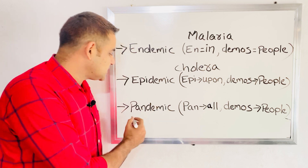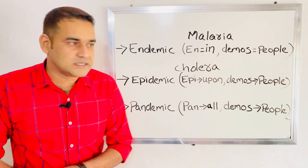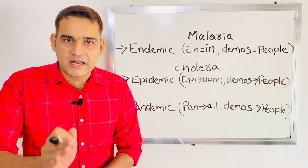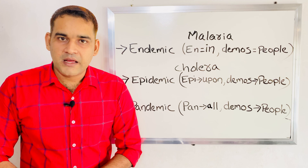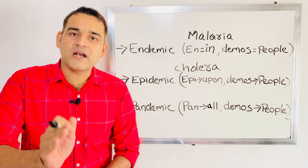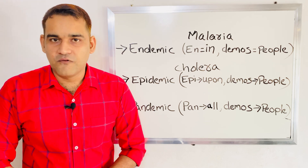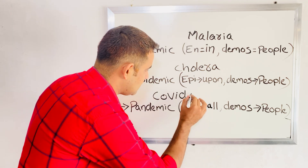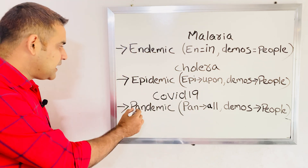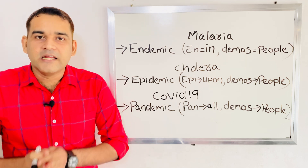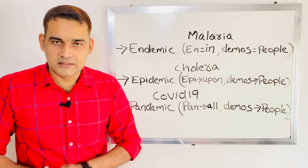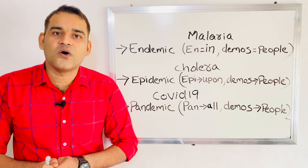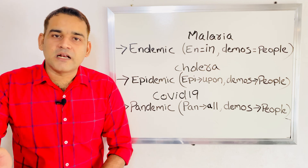Next is pandemic. Pandemic means an epidemic that has spread from one country to another country, or all over the world. For example, COVID-19 is a good example of a pandemic. COVID-19 was initially an epidemic in China, but slowly it spread from one country to another country and then all over the world.